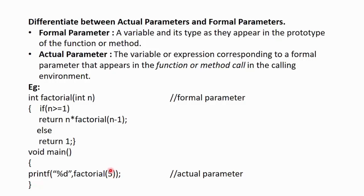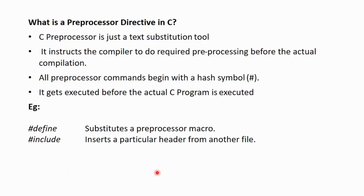Here, we have passed 5. So, this 5 becomes the actual parameter as it is corresponding to the formal parameter n and it appears in the function call. Here, we are calling the factorial function and we have passed 5, so it is the actual parameter. Next question, what is the preprocessor directive in C?